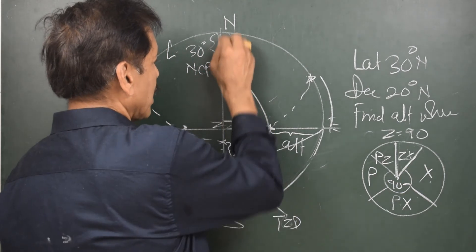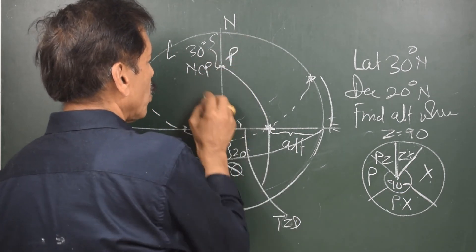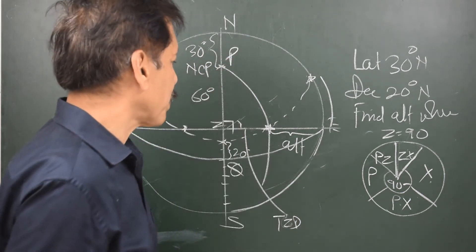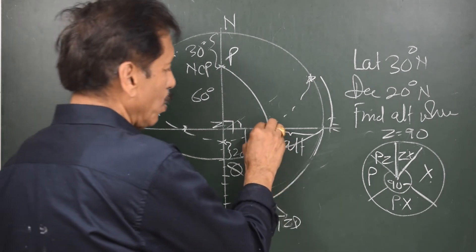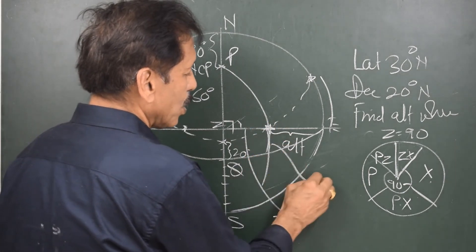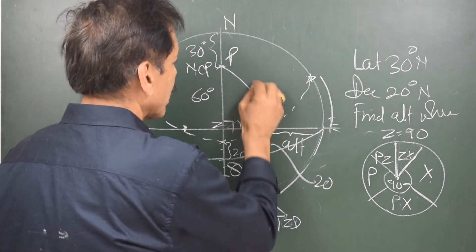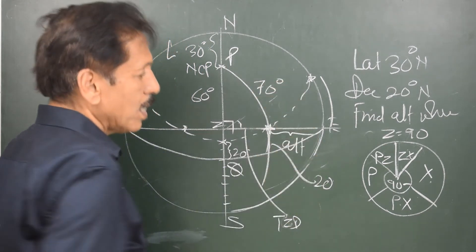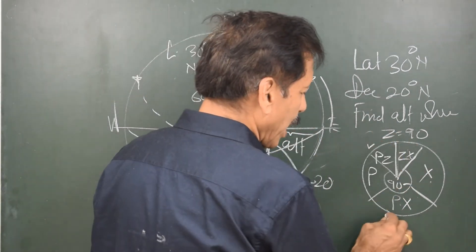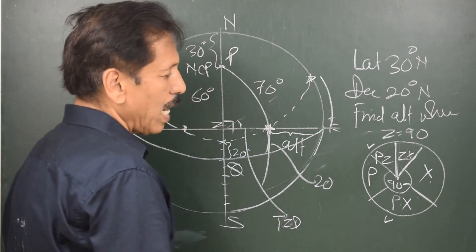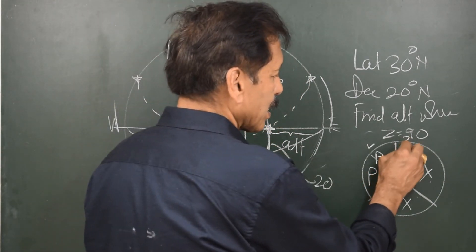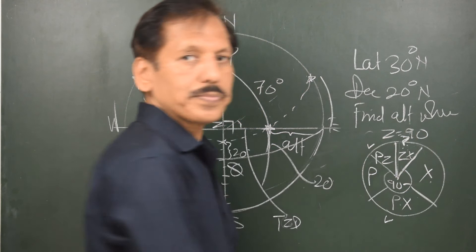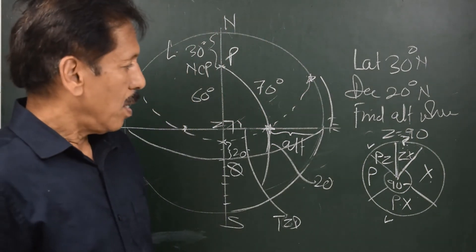Now, I know the latitude as 30 degrees. So, I know Pz also as 60 degrees. Similarly, I know the declination as 20 degrees. So, I know Px as 70 degrees. So, in this particular circle, I know Pz, I know Px and I have to find out what is Zx.